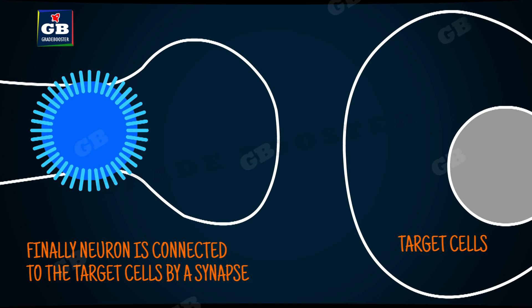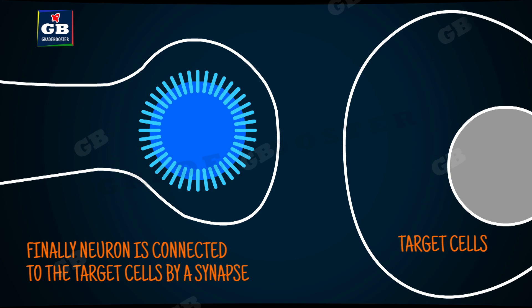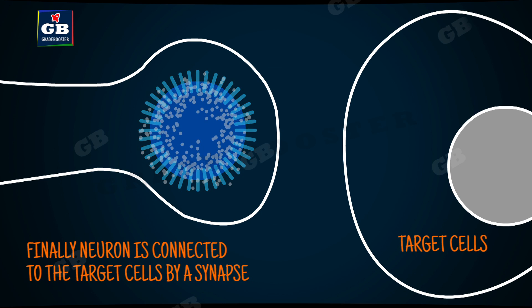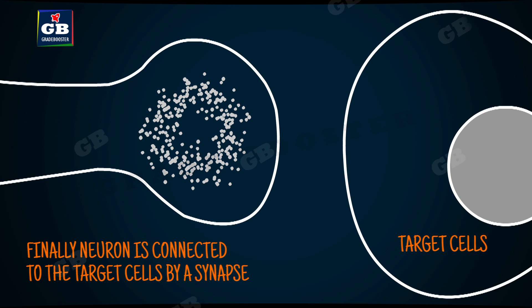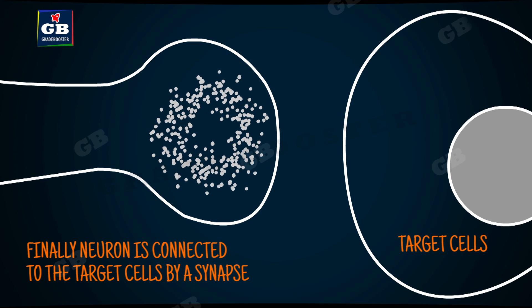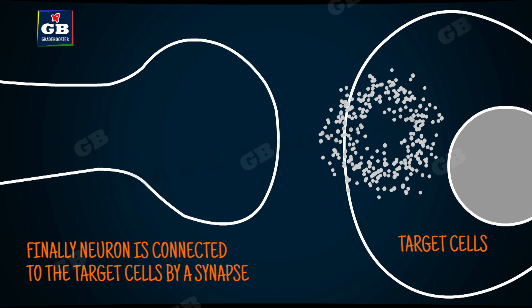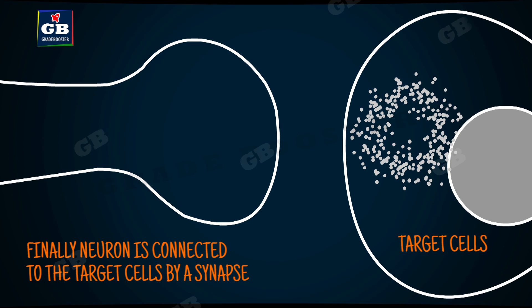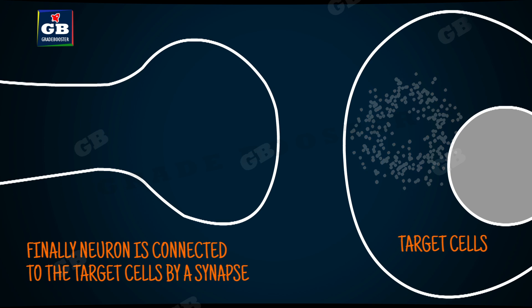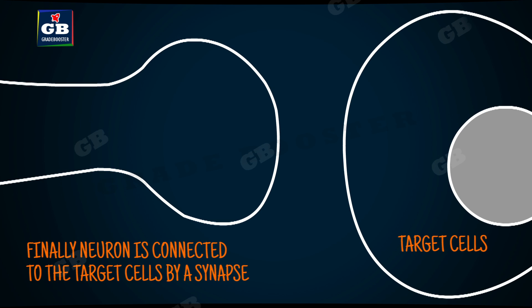Finally, the neuron is connected to the target cells, which can be either muscles or glands. The neuron is connected to the target cell by a synapse. Synapse is the gap between one neuron and the next neuron. This is how nerve impulses travel in our body.